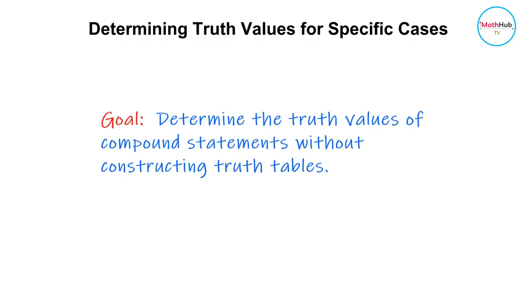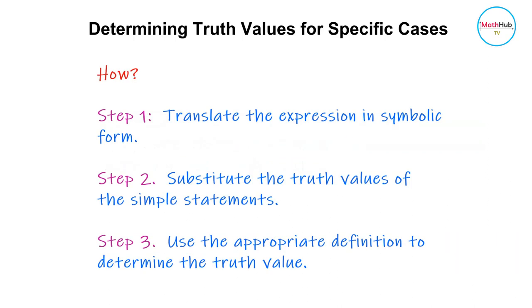You can also determine the truth value of a compound statement for a specific case without constructing an entire truth table. If we know the truth values of the simple statements, all you need to do is substitute the truth values into the symbolic form of the compound statement and use the appropriate definitions to determine the truth value.